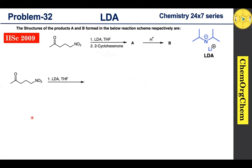Our first reaction condition involves LDA, which we have already discussed in previous videos — if you missed that, you can find the link in the description box below. As a recap, LDA, or lithium diisopropyl amide, is a non-nucleophilic, sterically hindered, strong base that readily abstracts protons from acidic positions in a molecule. LDA is useful for the generation of enolate ions by abstracting protons from the less hindered side.